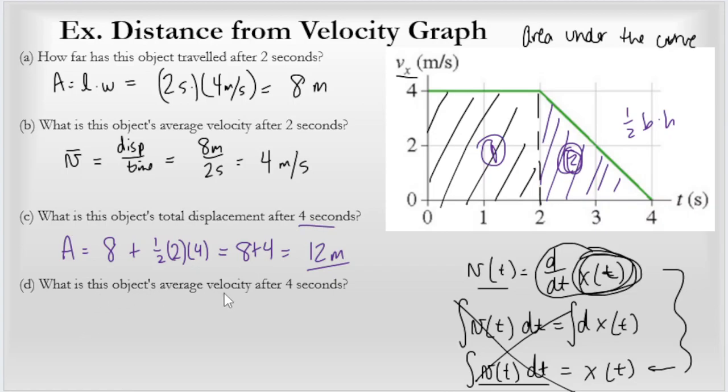What is the object's average velocity after four seconds? If we're doing average velocity, we're going to do the same thing we did up here. Displacement over time, we're going to have 12 meters and it travels that in four seconds. So the average velocity over that whole period is three meters per second.